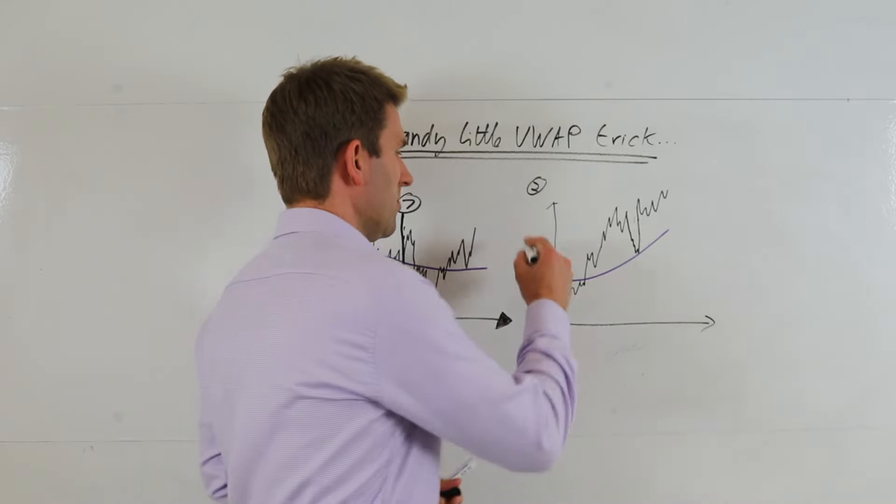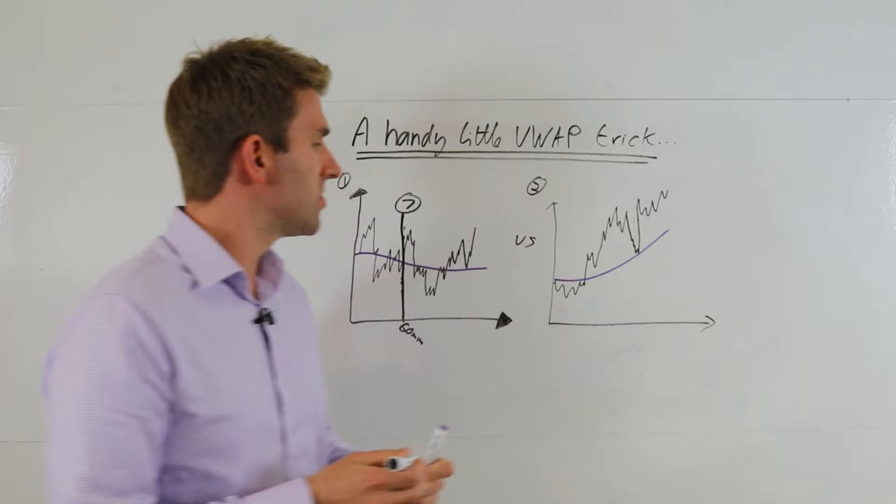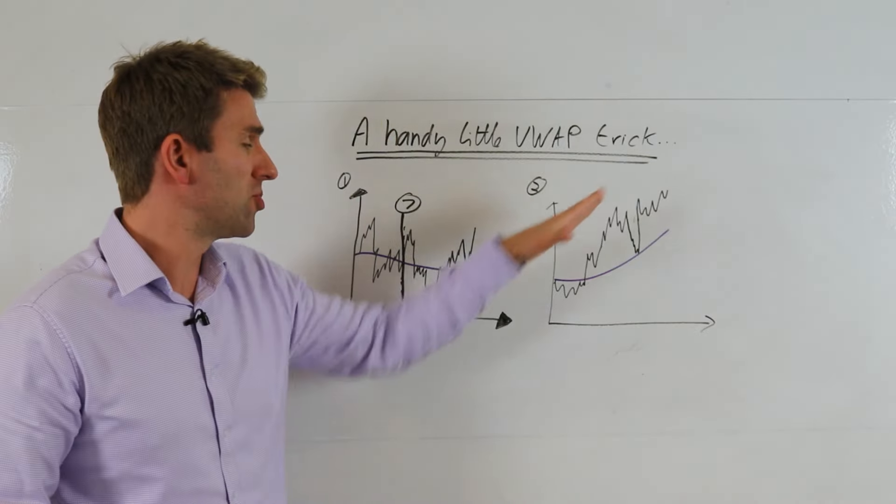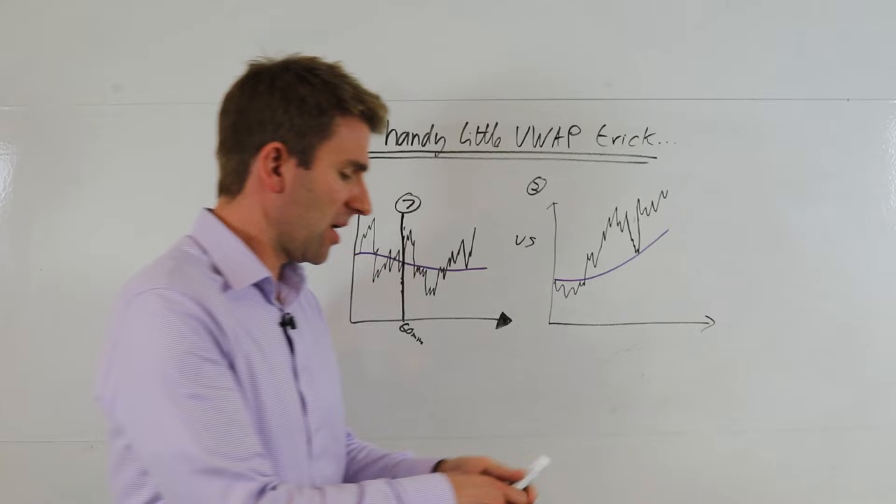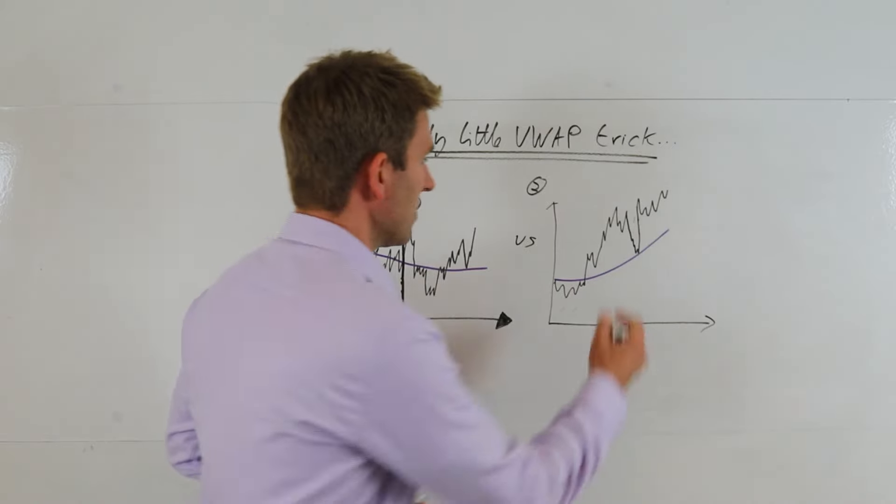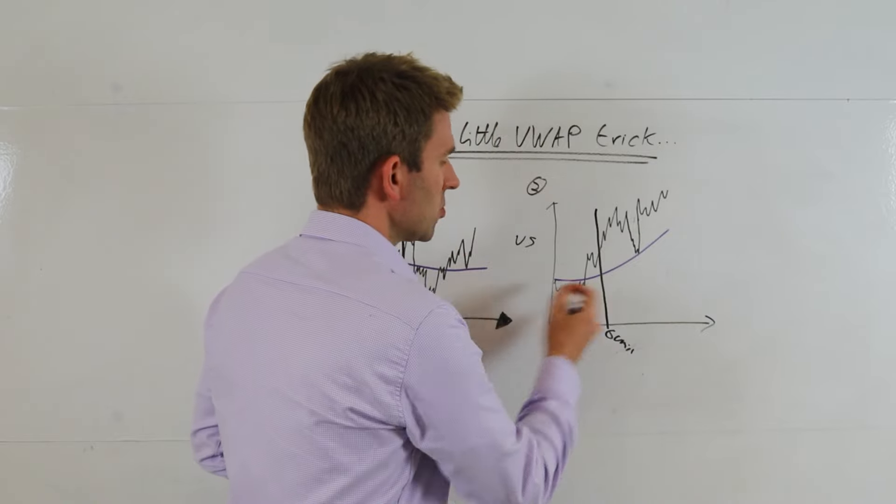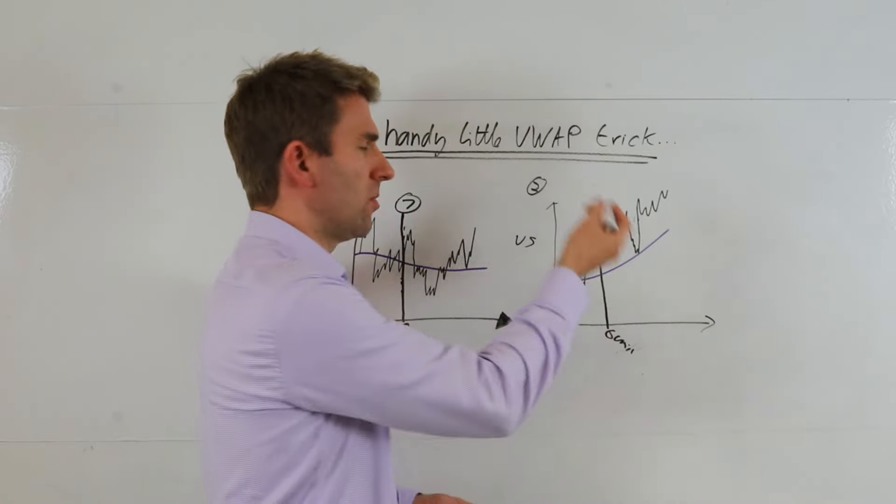getting your teeth stuck into momentum. If you look at number two here, we'll put versus number two. Again, VWAP will be sloping up in this example because you're pushing up. How many times have we touched it in the first hour? Here's the first 60 minutes.